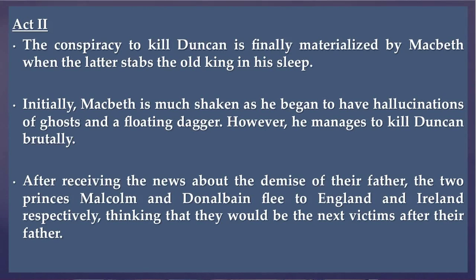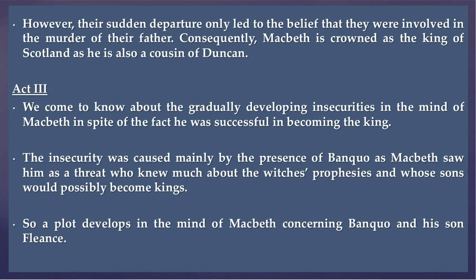Act 2: The conspiracy to kill Duncan is finally materialized by Macbeth when the latter stabs the old king in his sleep. Initially, Macbeth was much shaken as he began to have hallucinations of ghosts and a floating dagger. However, he manages to kill King Duncan brutally. After receiving the news about the demise of their father, the two princes, namely Malcolm and Donald Bean, flee to England and Ireland respectively, thinking that they would be the next victims. However, their sudden departure only led to the belief that they were involved in the murder of their father. Consequently, Macbeth is crowned as the king of Scotland as he is also a cousin of Duncan.